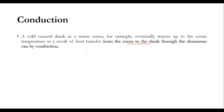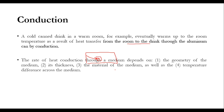If a can is placed in a room, heat transfer will be from the room to the can. Since a solid medium — the aluminium — is involved, heat transfers from the aluminium to the liquid material inside. So again, this is the form of conduction involved. The rate of heat conduction depends on various parameters: the geometry of the media, its thickness, the material of the medium, and the temperature difference across the medium.